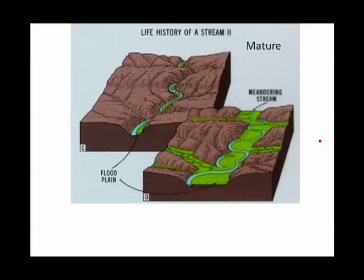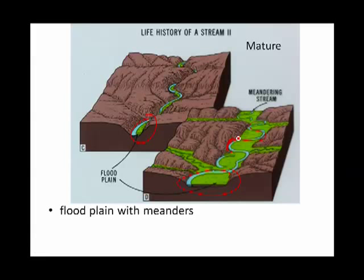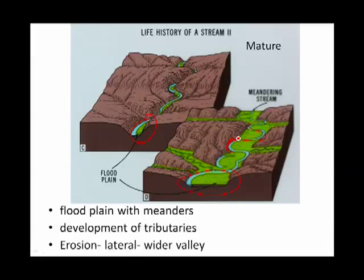Eventually the river slows down and starts depositing some sediment. First, it might be just a sandbar on the inside of a slight curve, but eventually that sediment becomes a wide floodplain — plain because it's flat, flood because it's covered in water during floods. If you have a floodplain, the stream starts to loop along it. These loops are called meanders. And when a meander hits the side of the bedrock, it erodes it by lateral erosion. We're also starting to form some tributaries. So a floodplain with meanders, development of tributaries, and lateral erosion are the hallmarks of a mature river.